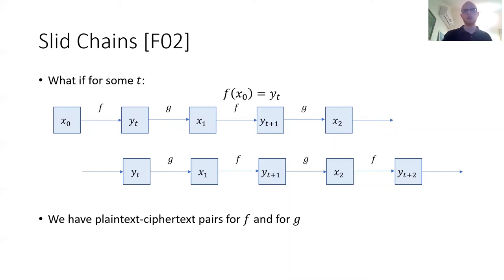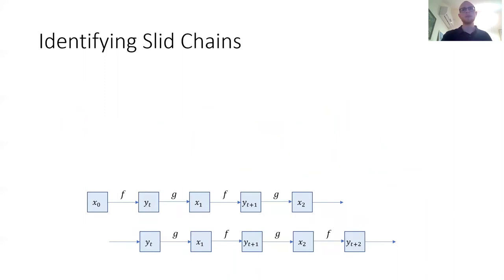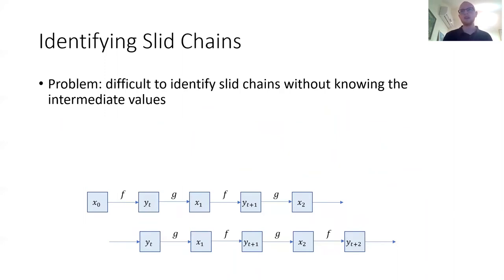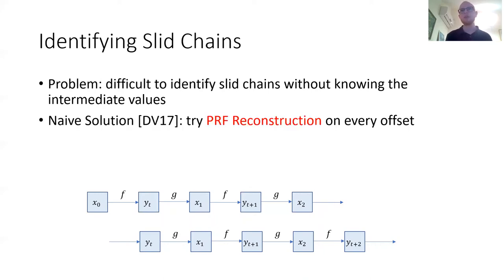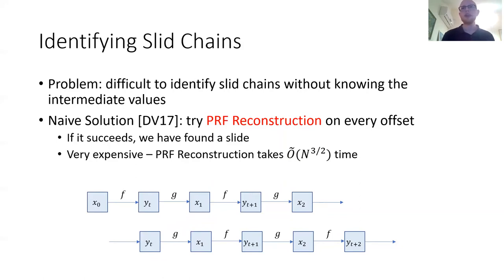Our goal is now to find such slid chains for a correct offset. The problem with identifying slid chains is that it's difficult to do so without knowing the intermediate values, since we do not know the encryption after four rounds of FF3. The naive solution is to not try to figure out which chains are slid: for every single possible offset between two chains, we simply try PRF reconstruction on that offset. If the reconstruction works, that means we have succeeded and we're finished. If it doesn't work, we can move on to the next offset. The problem is that this is very expensive in time.